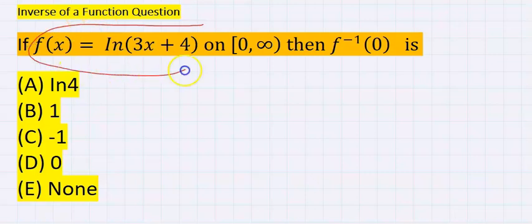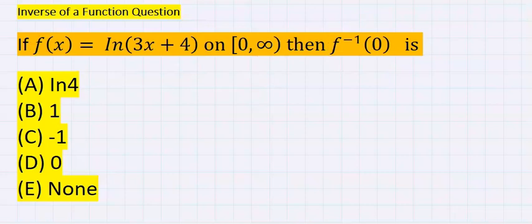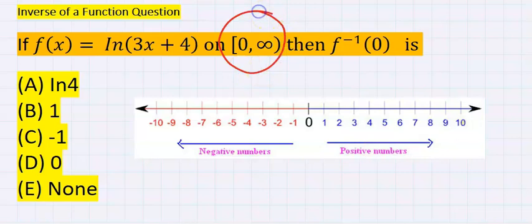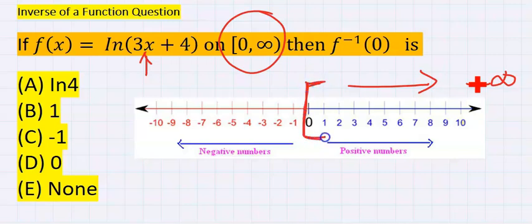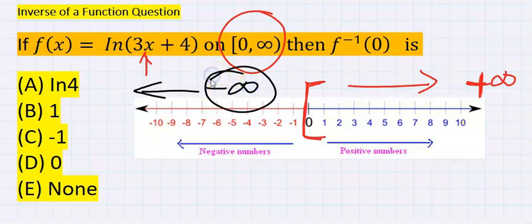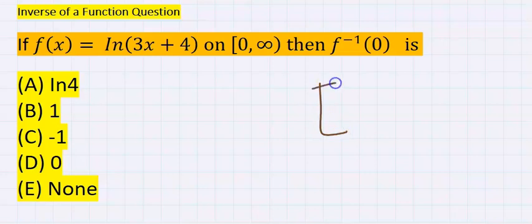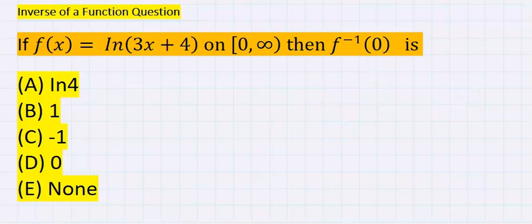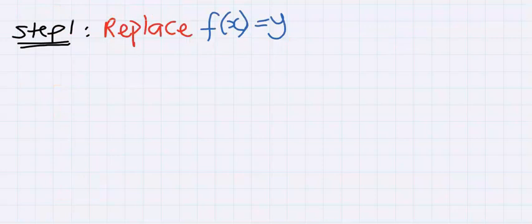Let's consider this function. If this function is defined on a certain domain, then what is f inverse of zero? This means that x can take values from zero to positive infinity, with zero inclusive and extending towards positive infinity exclusive. The question demands we find f inverse of zero.